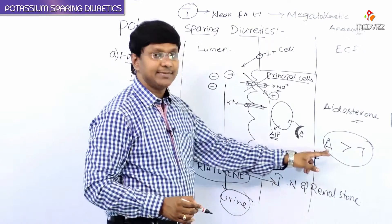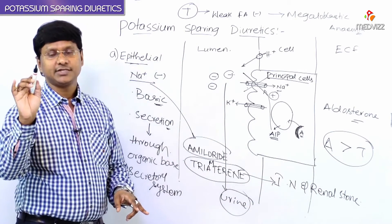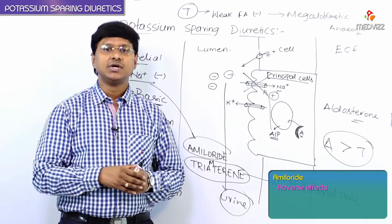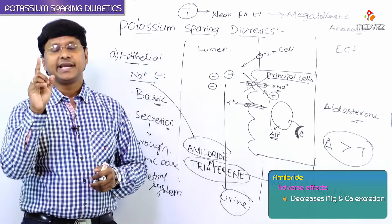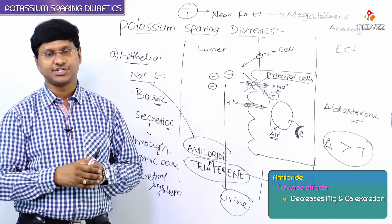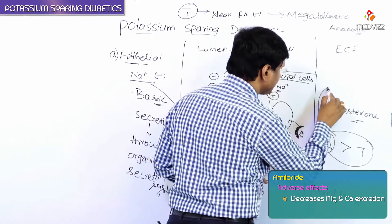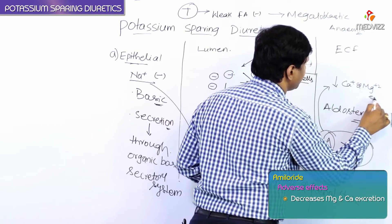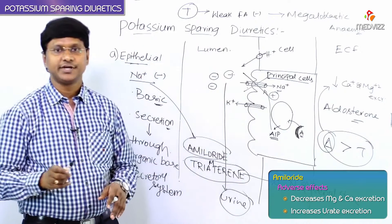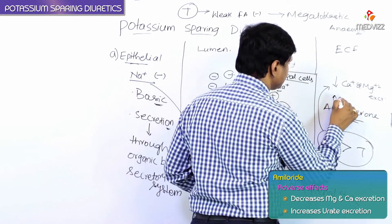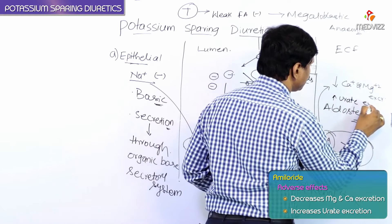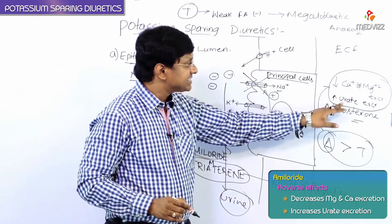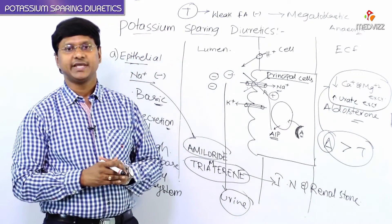Amiloride is more potent compared to triamterene. Amiloride is also associated with certain effects: it decreases the magnesium and calcium excretion. Amiloride also increases the urate excretion and decreases the calcium and magnesium excretion.